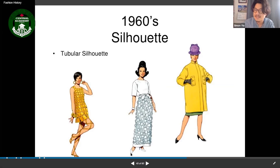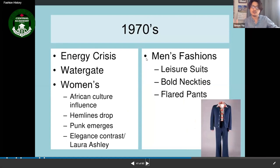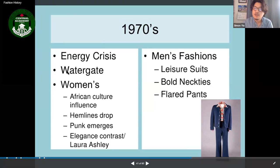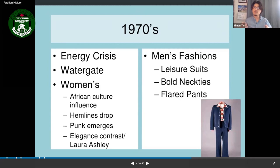In the 1970s, the U.S. faced an energy crisis and Watergate. African cultural influence became stronger in fashion — more rights led to more cultural expression in patterns and design. Hemlines dropped again. Punk rock imagery appeared alongside elegance, contrasting with designers like Laura Ashley. For men, leisure suits emerged — suits you could wear to dance, disco, or go out.